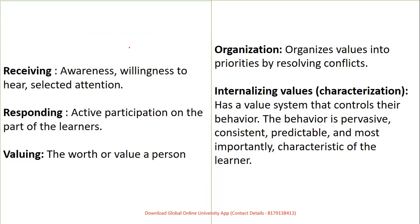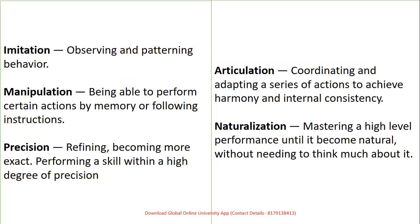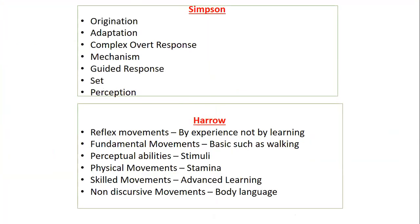Affective domain sequence: receiving (awareness and willingness), responding (active participation), valuing (giving worth to a person), organizing (resolving), and internalizing/characterizing (controlling behavior, being predictable and consistent). Psychomotor domain: imitation (observing), manipulation (performing actions), precision (refining, making more exact and efficient), articulation (coordination, adapting a series), and naturalization (mastering high level of performance).